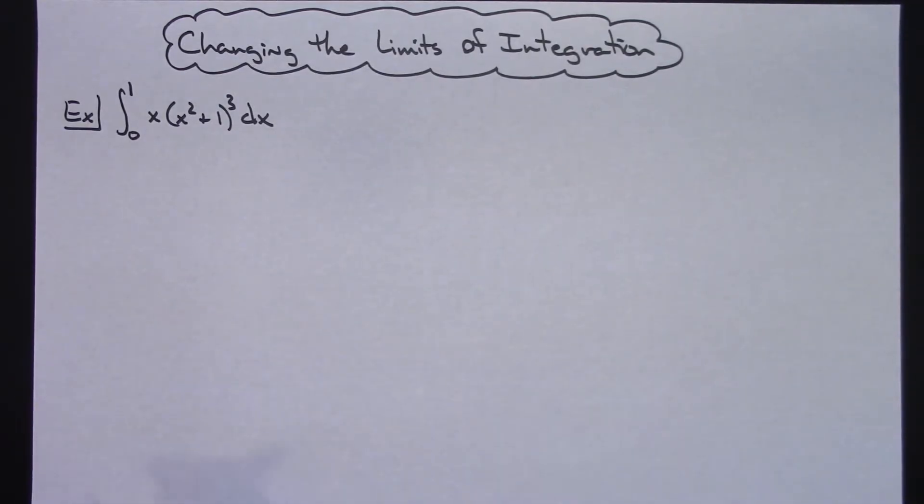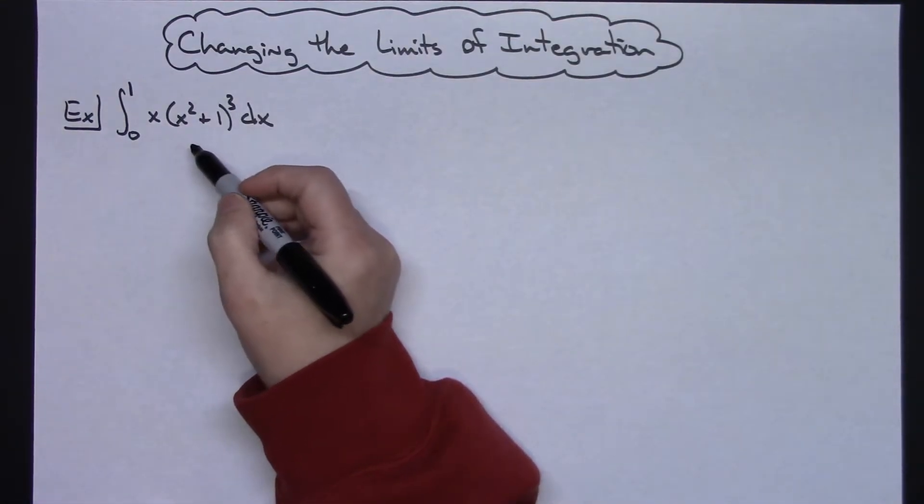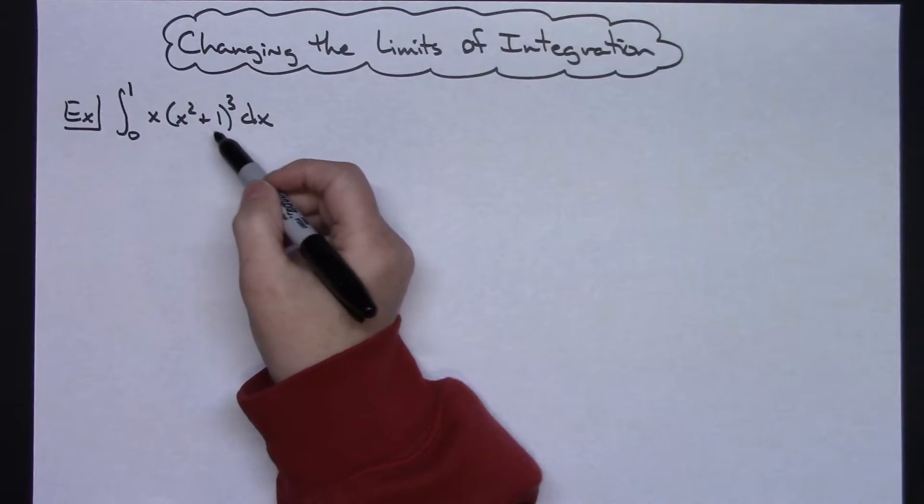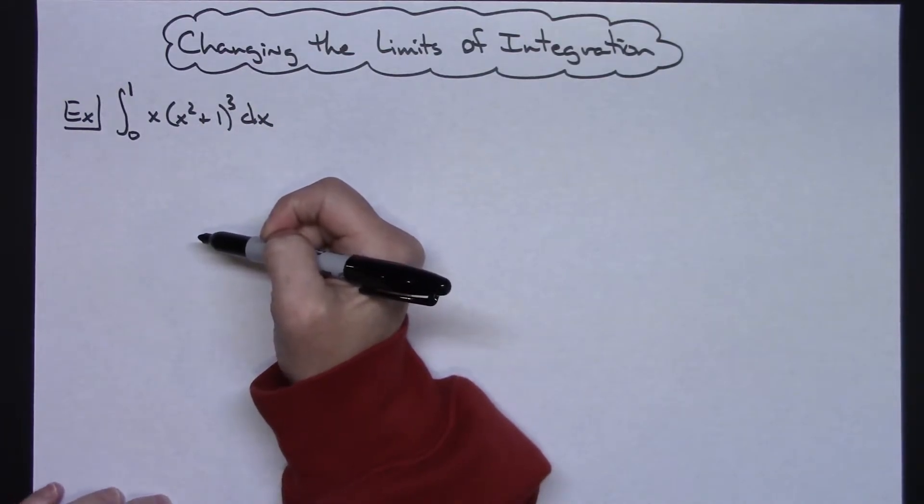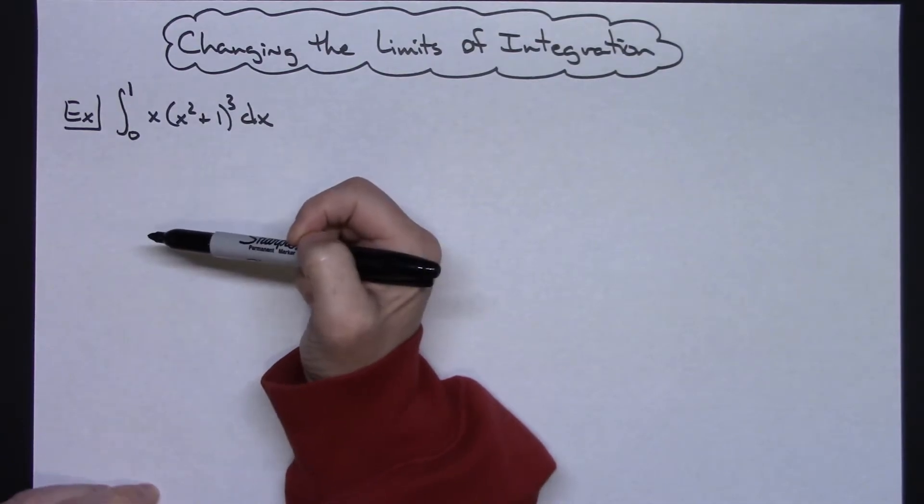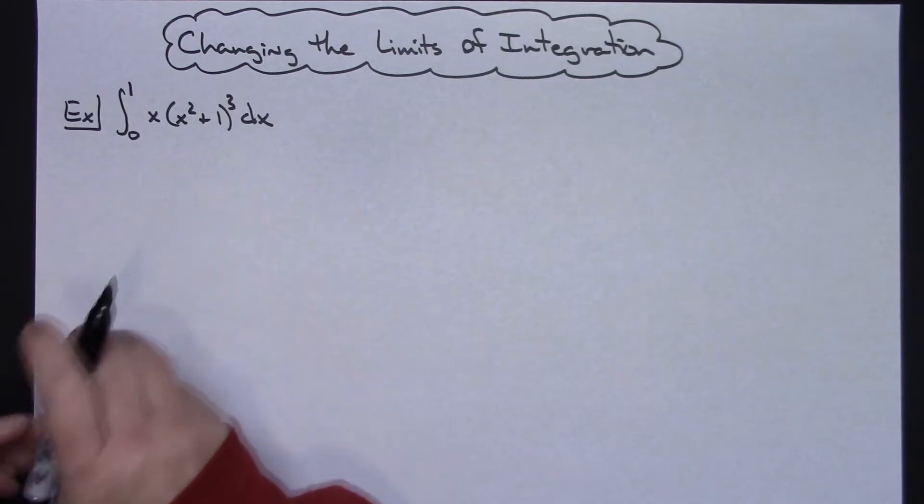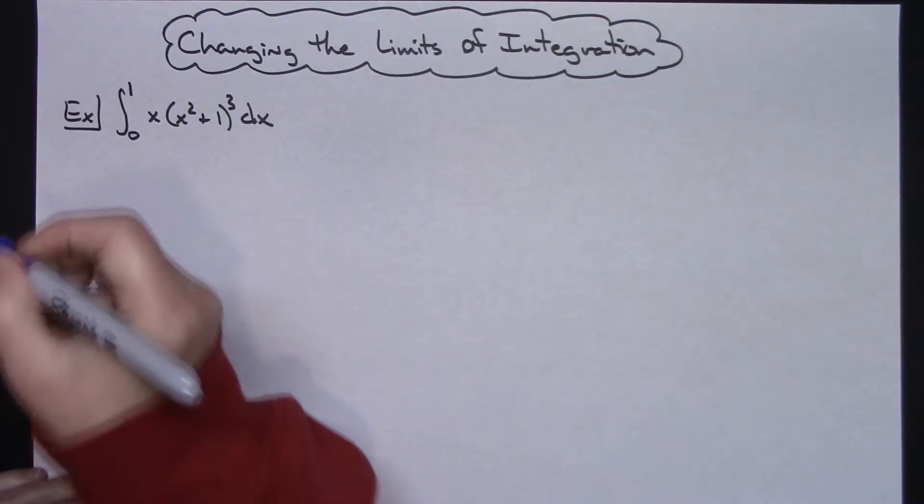I'm working out actually that exact same problem here. I'm integrating from 0 to 1 of x times the quantity x squared plus 1 raised to the third dx. Now keeping in mind these are limits of integration for x. So what I'm going to do initially is I'm just going to start it like a regular integration problem here. Let's even do this in a different color here.